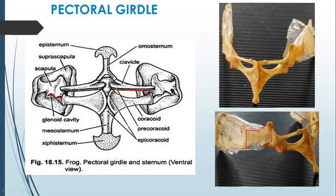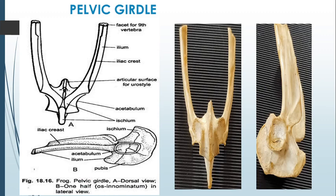Moving on to the pelvic girdle, which is found in the hip region - you can see it has a direct connection with the vertebral column and is in the form of a V shape. The two ends of the V attach to the transverse process of the ninth vertebra, which has largely stout transverse processes that come and attach to these two ends. The tenth vertebra, or the urostyle, gets attached to the articular surface in this area.